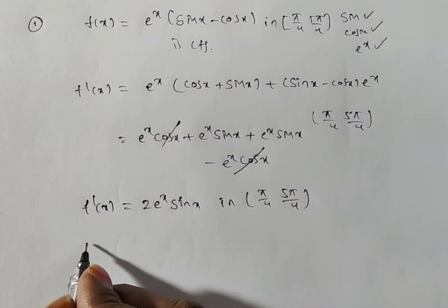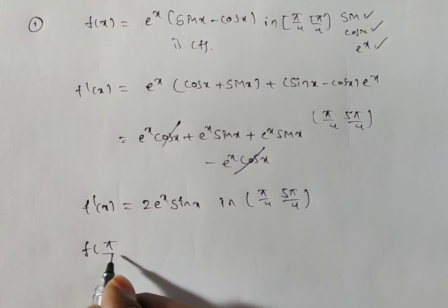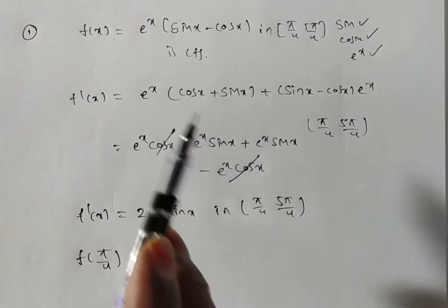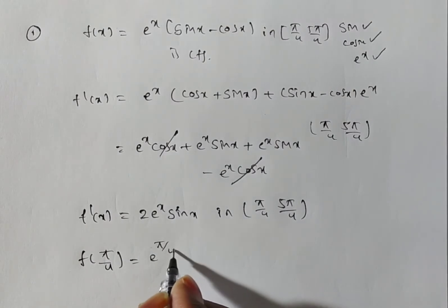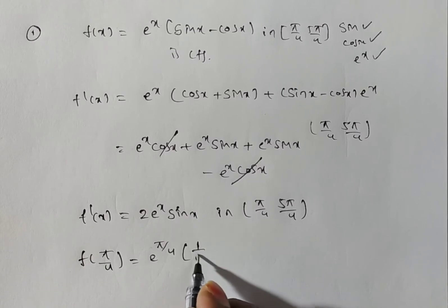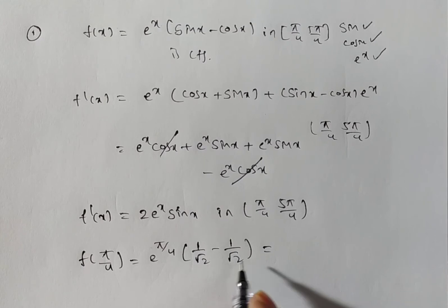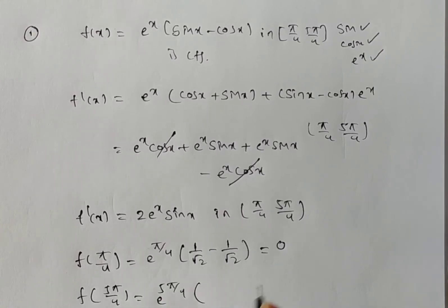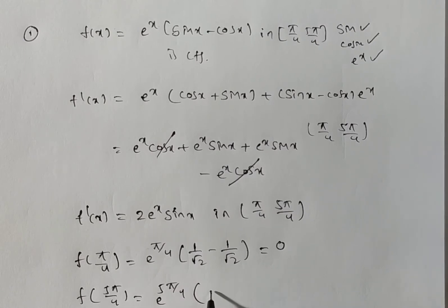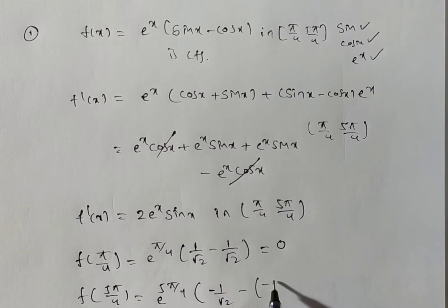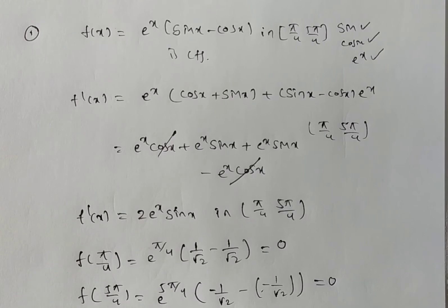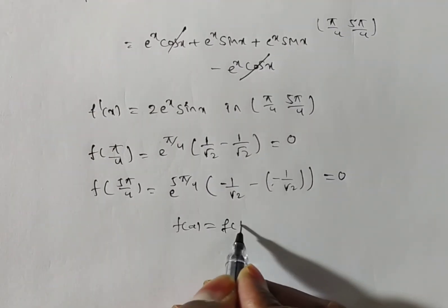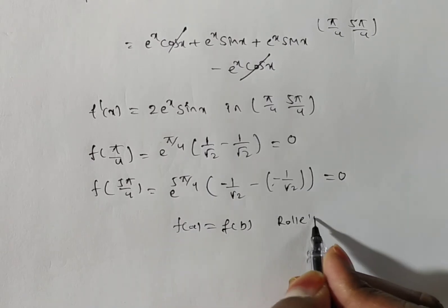Now we verify the third condition: f(a) = f(b). f(π/4) = e^(π/4) · (sin(π/4) − cos(π/4)) = e^(π/4) · (1/√2 − 1/√2) = 0. Next, f(5π/4) = e^(5π/4) · (sin(5π/4) − cos(5π/4)) = e^(5π/4) · (−1/√2 − (−1/√2)) = 0. So f(a) = f(b), therefore Rolle's theorem is applicable.